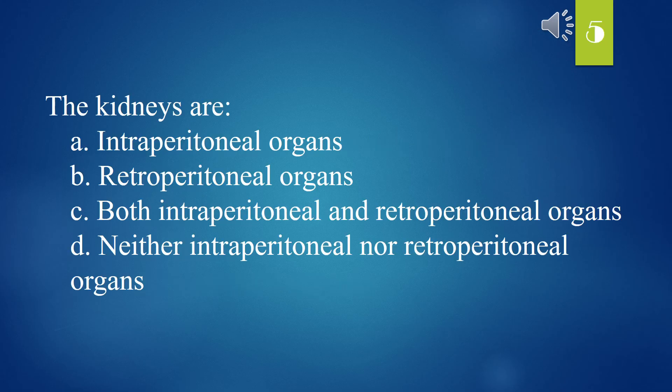The kidneys are: A. Intraperitoneal organs. B. Retroperitoneal organs. C. Both intraperitoneal and retroperitoneal organs. D. Neither intraperitoneal nor retroperitoneal organs. The answer is B. Retroperitoneal organs.